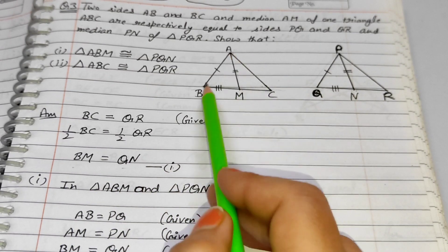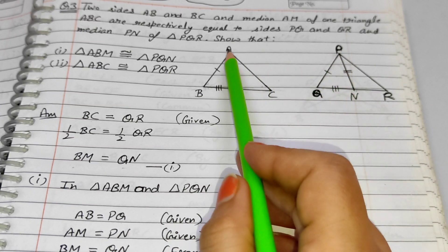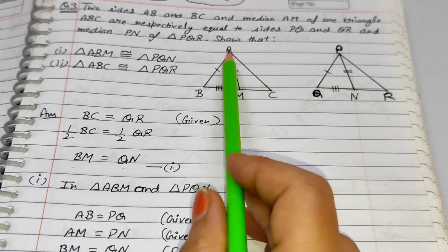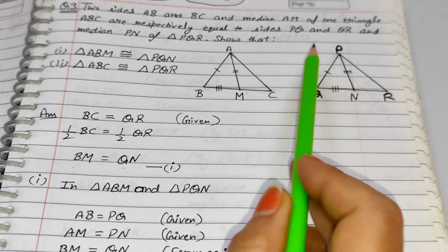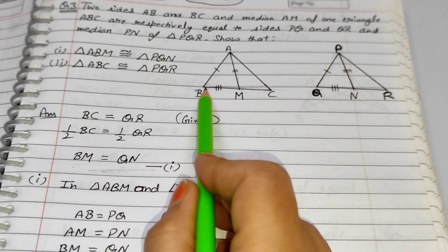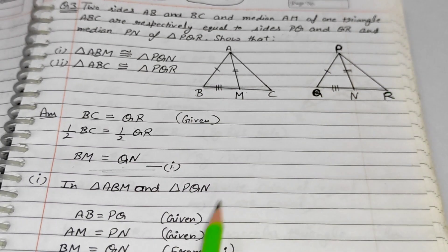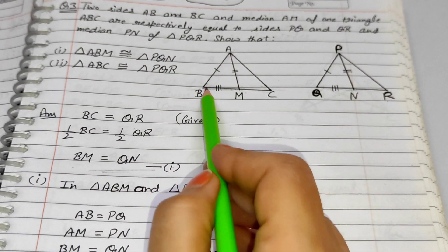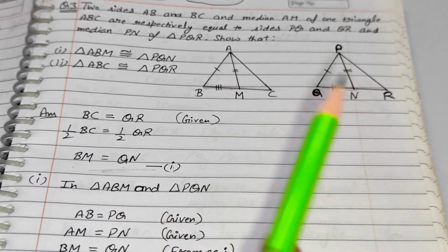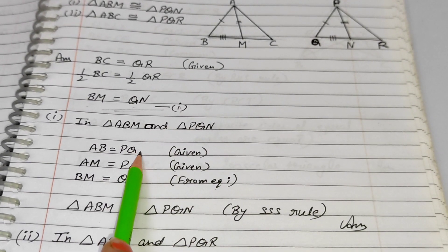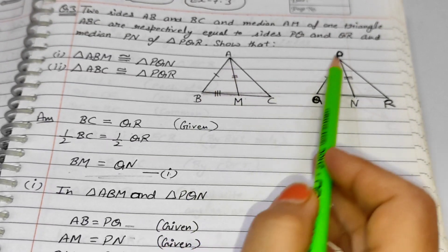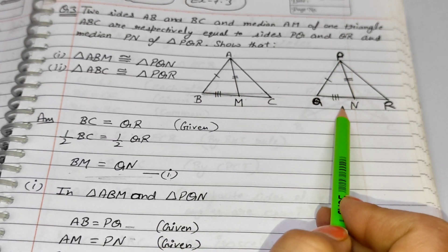Then, in triangle ABM and triangle PQN: AB equals PQ (given), AM equals PN (medians are equal, given), and BM equals QN (from the first equation). By SSS (Side-Side-Side), triangle ABM is congruent to triangle PQN.